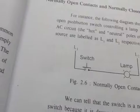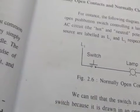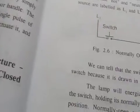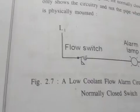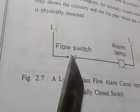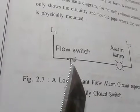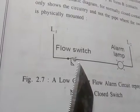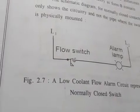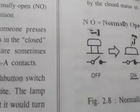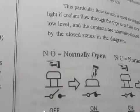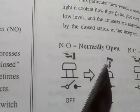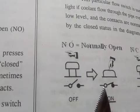Normally open means if you stimulate — physically apply force — then only the switch will close and go to on state. Normally closed means the switch is in the closed position when there is no stimulation, no force. In the diagram, the switch shown with no force applied is in the open position — that is normally open. When you apply force and press it, the switch closes.